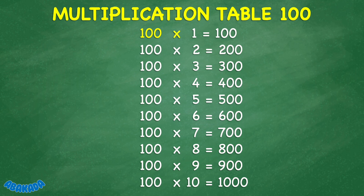100 times 1 equals 100. 100 times 2 equals 200. 100 times 3 equals 300. 100 times 4 equals 400. 100 times 5 equals 500. 100 times 6 equals 600. 100 times 7 equals 700. 100 times 8 equals 800. 100 times 9 equals 900. 100 times 10 equals 1000.